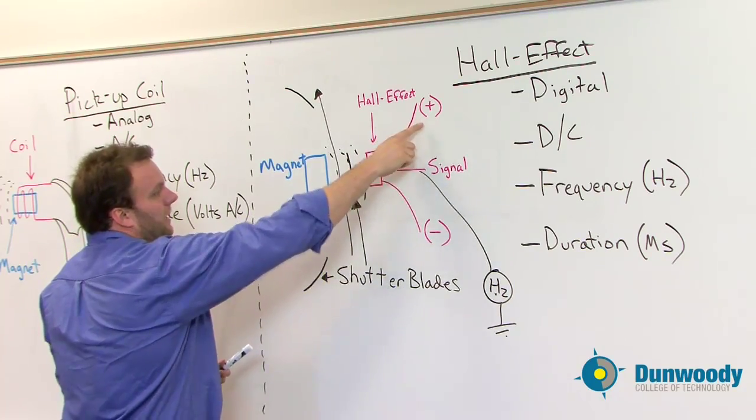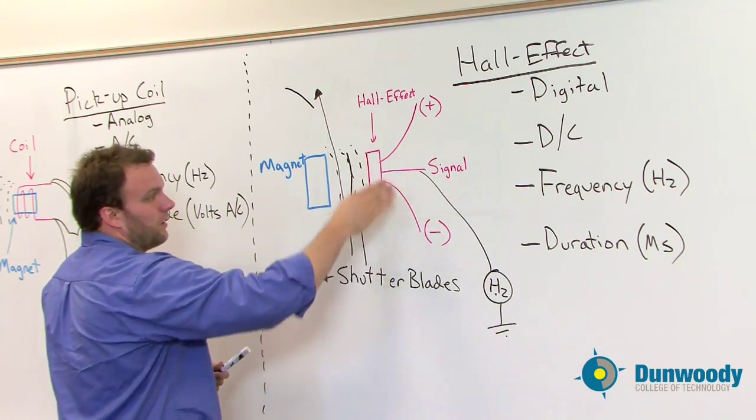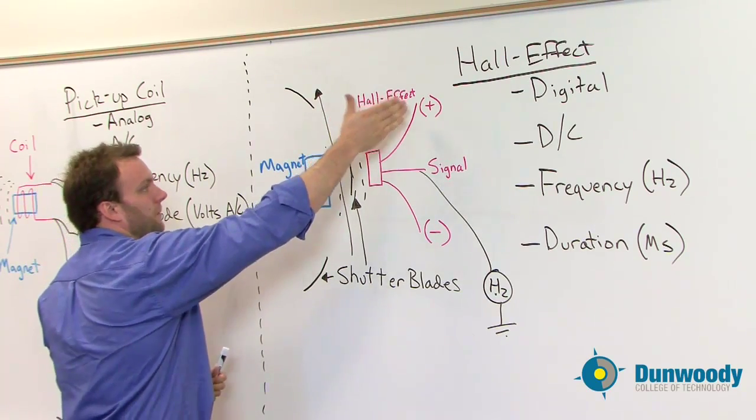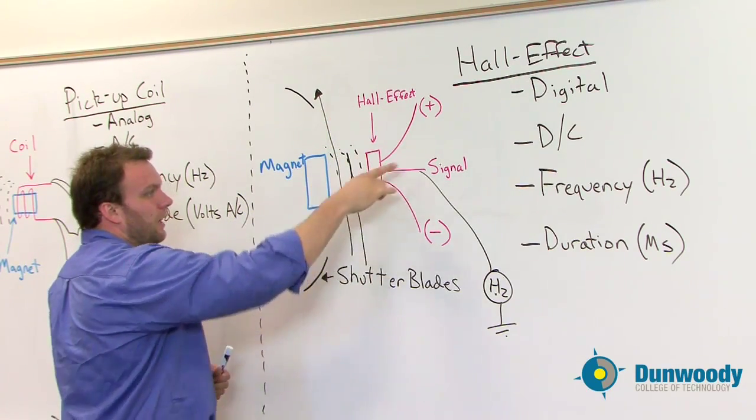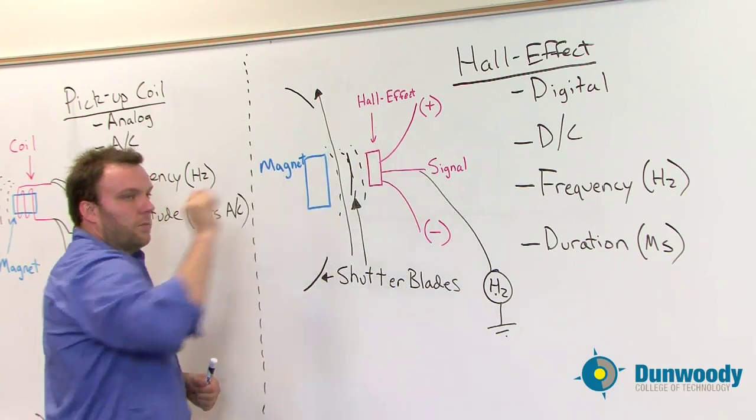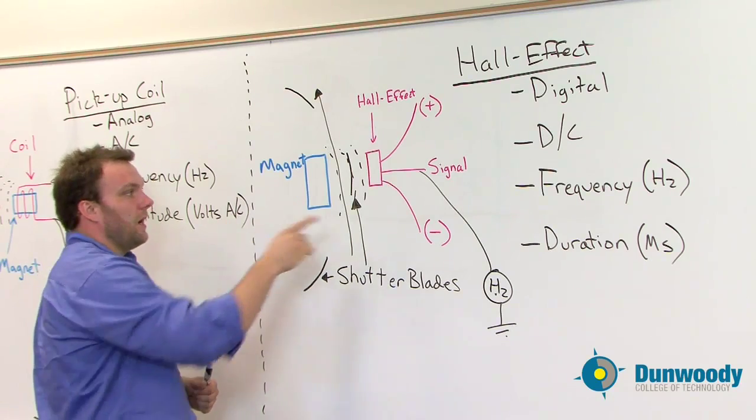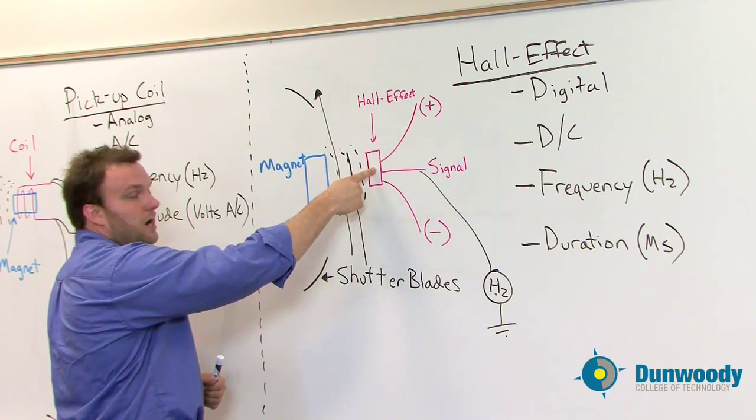But it has to be powered, so we have power coming in, we have to have a ground, and we have to have a signal. So what we can test for is, does this sensor have a power and a ground, and we need to have a signal. We won't have that digital signal on or off if we don't somehow change the magnetic field that's crossing here.